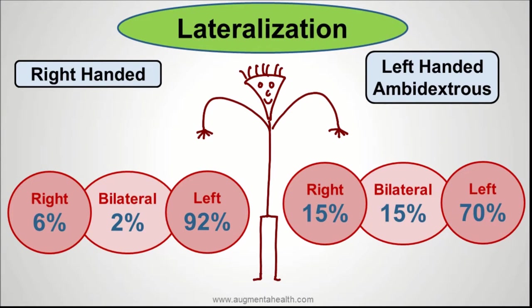When we are talking about lateralization, it is also important to understand about right-handedness and left-handedness. We all know the majority of people are right-handed. In right-handed people, about 92% of them have left brain dominance. It is only a small percentage of 6% having right brain dominance, whereas 2% might have bilateral equal or similar representation.